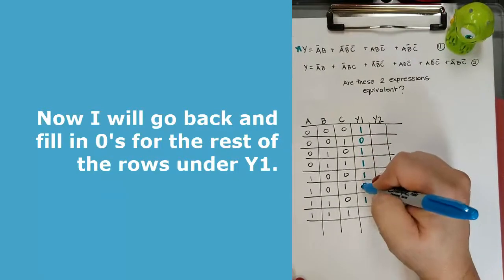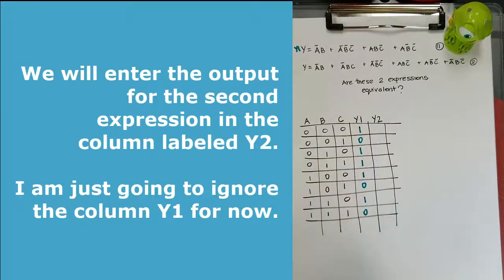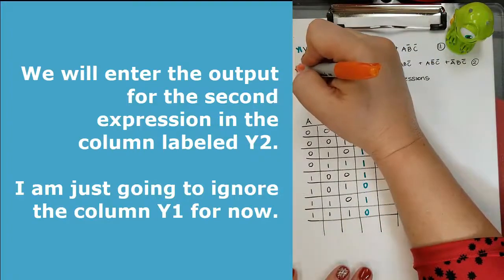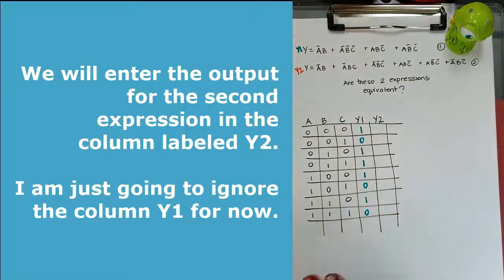Okay, so now we're going to call the other one Y2. And I'm just going to ignore Y1 for now, I'm just going to cover that up because it's like I made two truth tables.